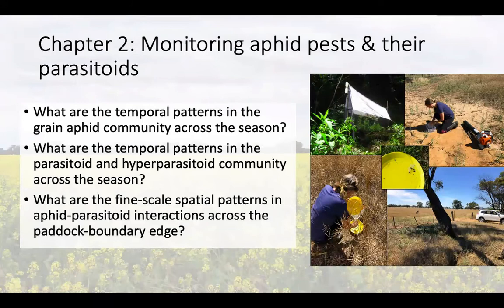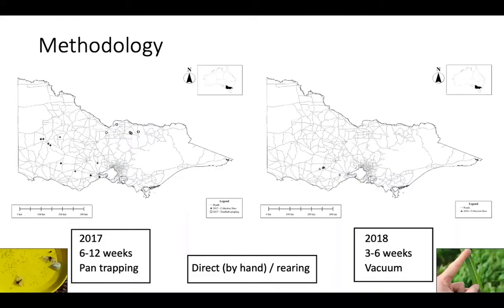Beginning with Chapter 1, the monitoring of aphid pests and their parasitoids, we asked: what are the temporal patterns in the grain aphid community across the season? What are the temporal patterns in the parasitoid and hyperparasitoid community? And what are the fine-scale spatial patterns in aphid-parasitoid interactions across the paddock boundary edge? This work was undertaken over two years in 2017 and 2018. In the first year I went out every 6 to 12 weeks undertaking direct searching by hand, picking up any aphids and mummies, and rearing out wasps from mummies back in the lab.